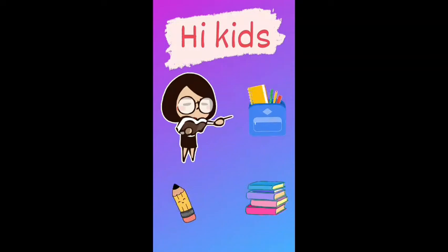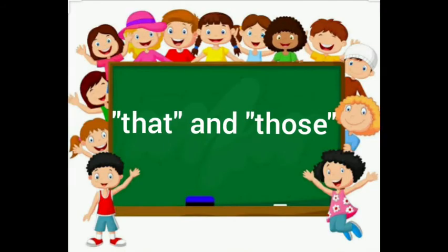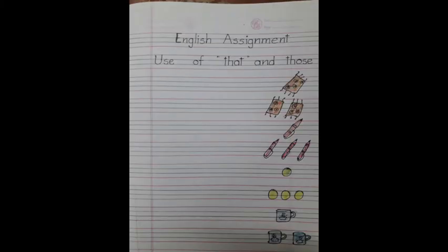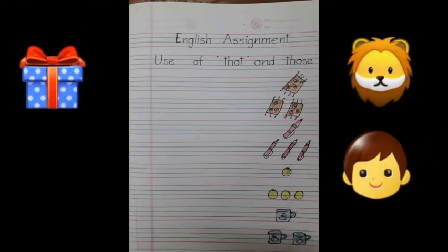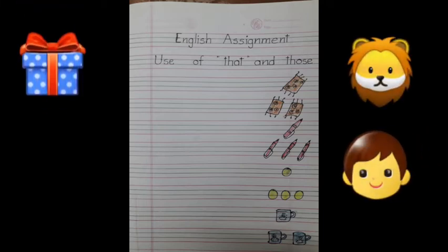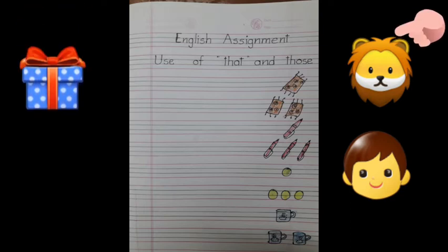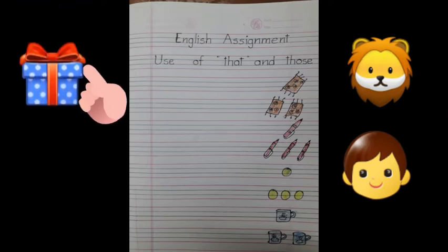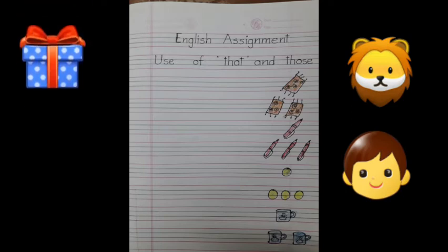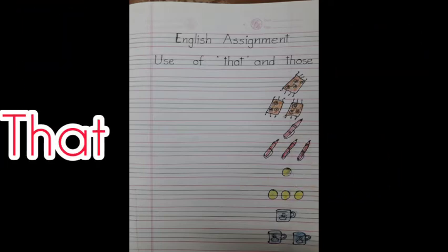Hi kids, welcome to the English class. Today I am going to teach you the use of that and those. As I told you earlier, we use the word that to identify or point out a single thing, animal, or person far from us. That हम उस जगाई यूस करती हैं, जब एक animal हो, एक person और कोई एक चीज हो. Then we use the word that और जो हम से दूर भी हो.